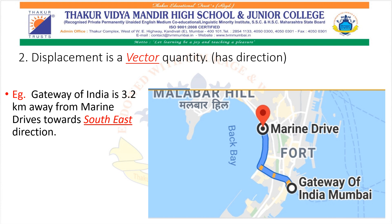Whereas displacement has both magnitude and direction, so it is a vector quantity. Notice the map example: Gateway of India is 3.2 km away from Marine Drive towards the southeast direction. So besides total length, it shows direction too.